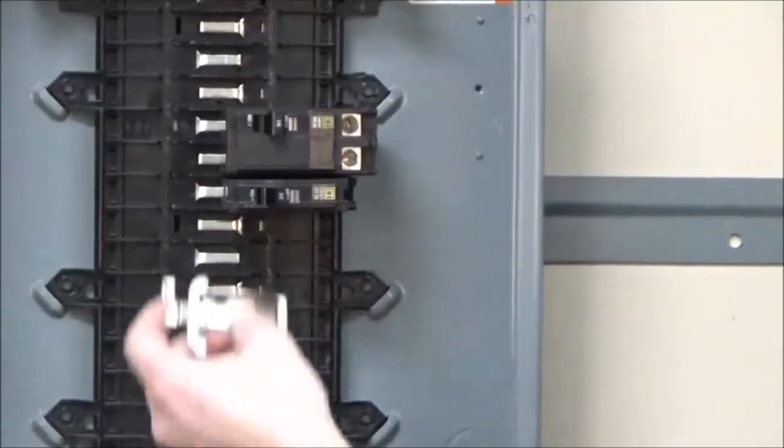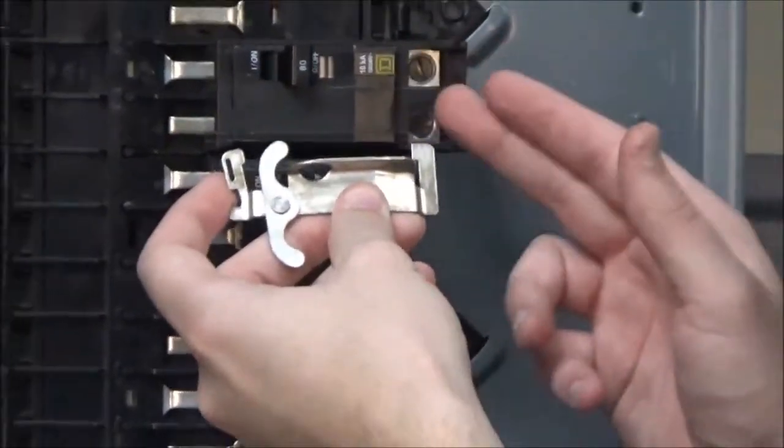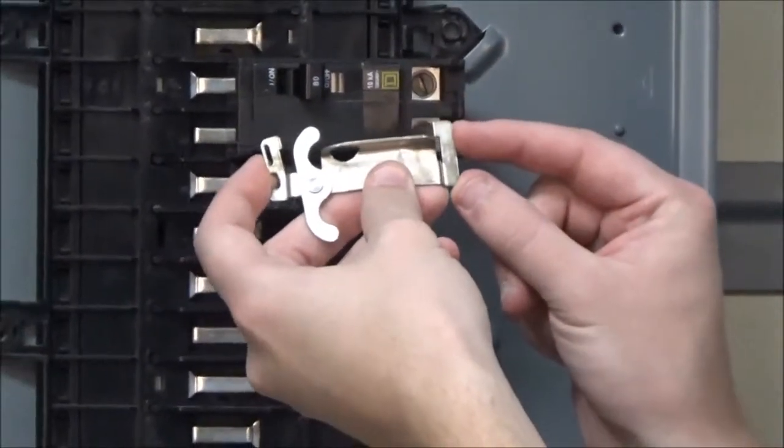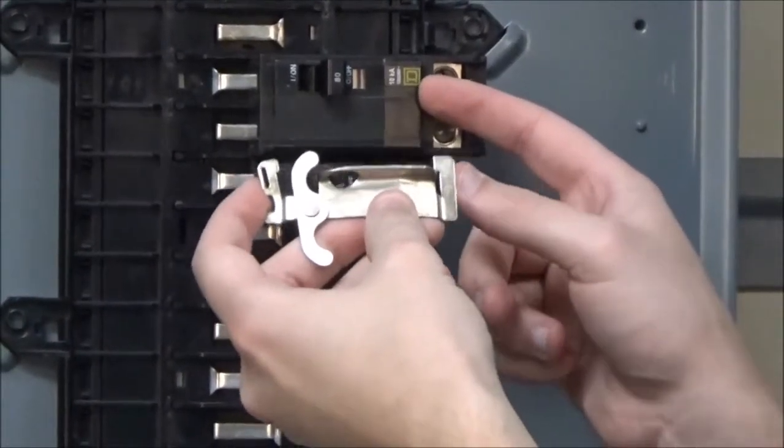First you will place the kit onto the top or right-hand side breaker so that this tab fits into the notch on this part of the breaker.